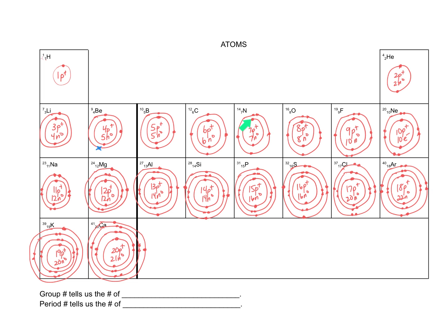Nine protons, nine electrons — one, two, and then seven more to make nine. Ten protons, so ten electrons: two in the first shell plus eight is ten. When you move on to sodium with eleven protons, you need to add the third shell. Counting: one, two, three, four, five, six, seven, eight, nine, ten — then we add the third shell to place the eleventh electron.